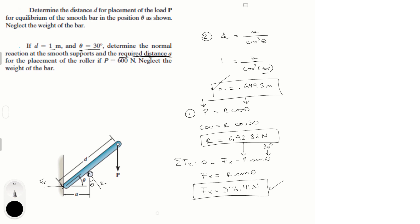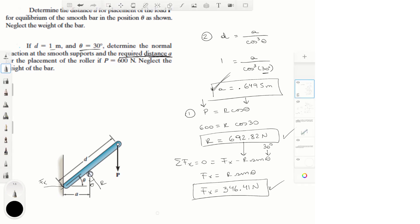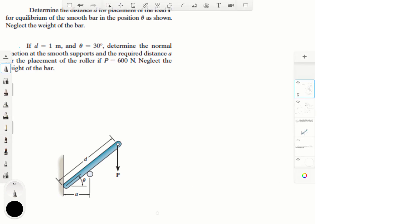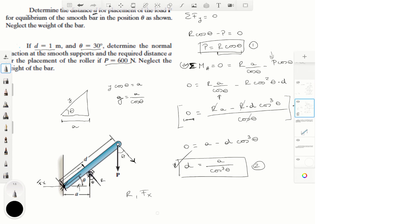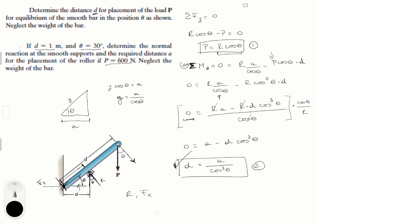Final answers: Fx equals 346.41 N, R equals 692.82 N, and the required distance a equals 0.6495 m for the second part. For the first part, the distance d required for equilibrium is d equals a over cos³θ.